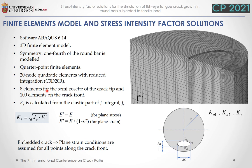A typical spiderweb mesh around the crack tip using quarter-point finite elements was used, with a mesh density of 8 elements for the semi-rosette of the crack tip and 100 elements on the crack front. The stress intensity factor is calculated from the elastic part of the J-integral, assuming plain strain conditions for all points along the crack front for the embedded elliptical crack. Only the stress intensity factor at the vertices of the elliptical crack was calculated, termed as points A1, A2, and C.